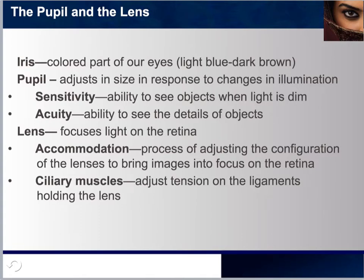The iris is the colored part of our eyes, ranging from light blue to dark brown. Anyone who says they have black eyes simply hasn't looked at their iris under bright light — if you shine a flashlight at your eyes, you'd be able to perceive the different hue of dark brown.